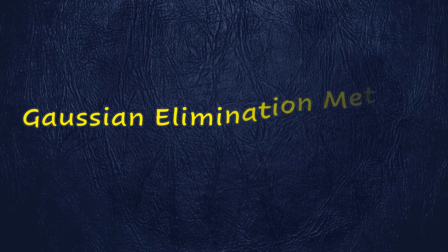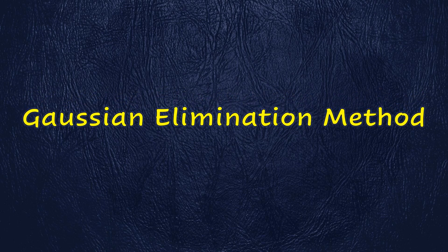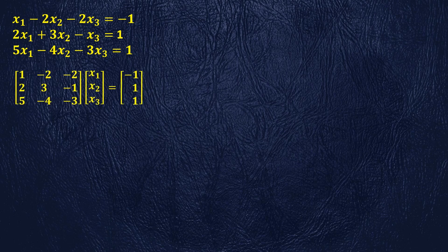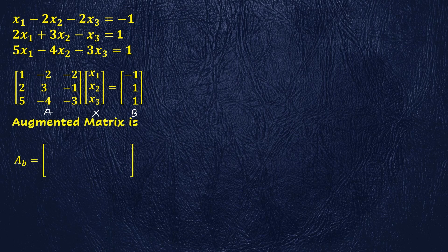In the Gaussian elimination method, we shall explain this method with the help of an example. We take a system of three non-homogeneous equations in three variables and write the system in matrix form. The first matrix is the matrix of coefficients, the second is the matrix of variables, and the third is the matrix of constants.